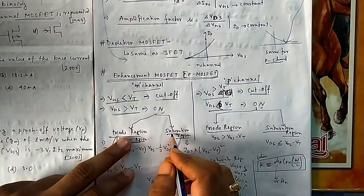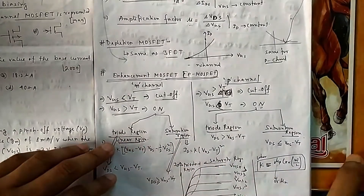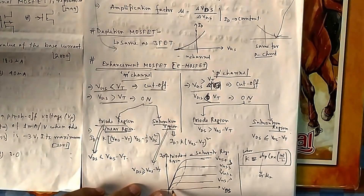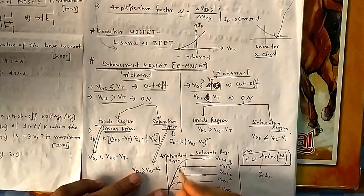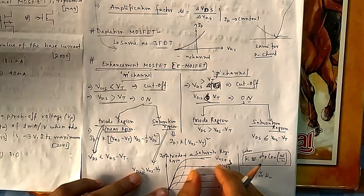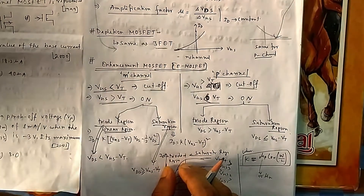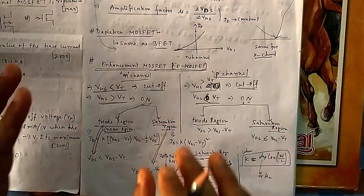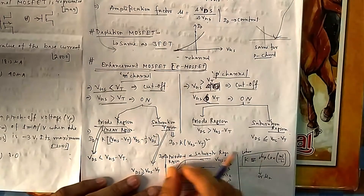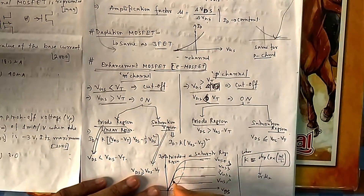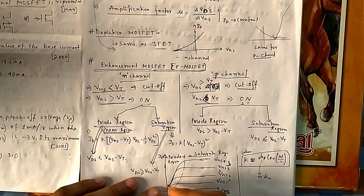Enhancement MOSFET, when on, has two regions: triode region (linear) and saturation region. Looking at the I_D vs V_DS graph, increasing V_GS increases I_D. There is a linear portion (triode region) and a flat portion (saturation region). JFET also has these regions but for enhancement MOSFET we explicitly distinguish them.